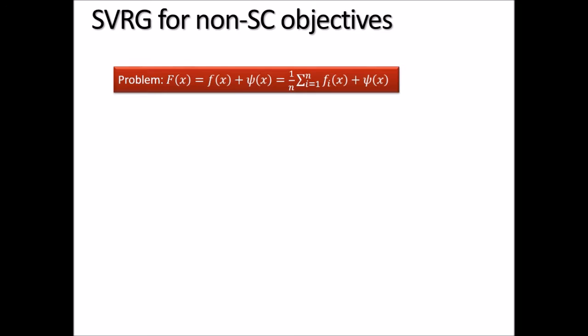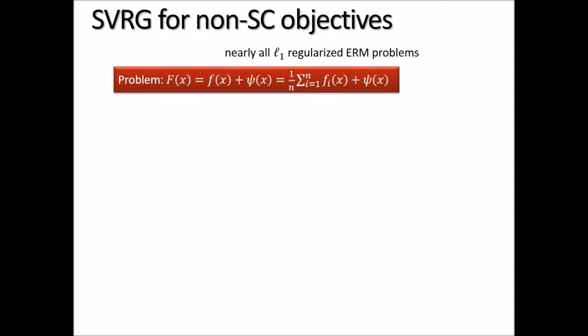More formally, we focus on minimizing composite functions of the form F plus psi, where psi could be an easy proximal function such as the L1 regularizer, and F is a finite average of the fi's. Lasso and logistic regression both fit into this framework. Nearly all L1-regularized ERM problems fall into this setting. SVRG's original theorem and follow-up work do not solve this problem directly.